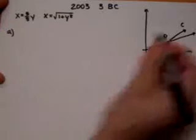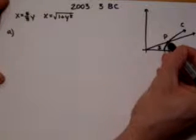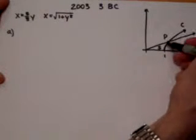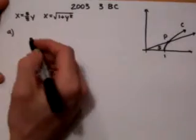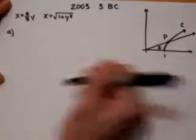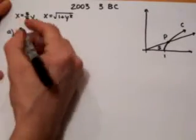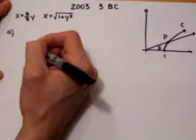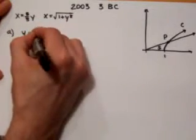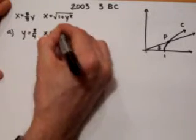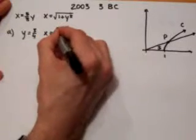Part A asks to find point P and dx/dy of C at that point. So here we have two equations for X for these two functions and we set them equal on our calculator and we find out they're equal when Y is equal to 3/4 and X is equal to 5/4.